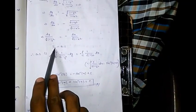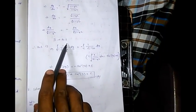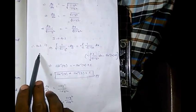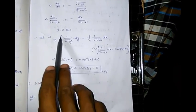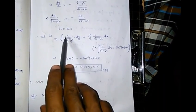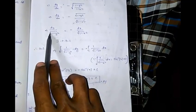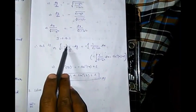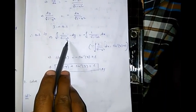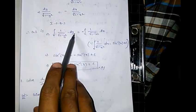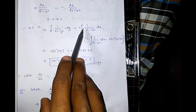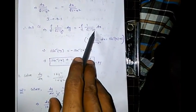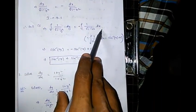Integrating on both sides gives the general solution. Integration of 1/√(1−y²) dy = −∫1/√(1−x²) dx.